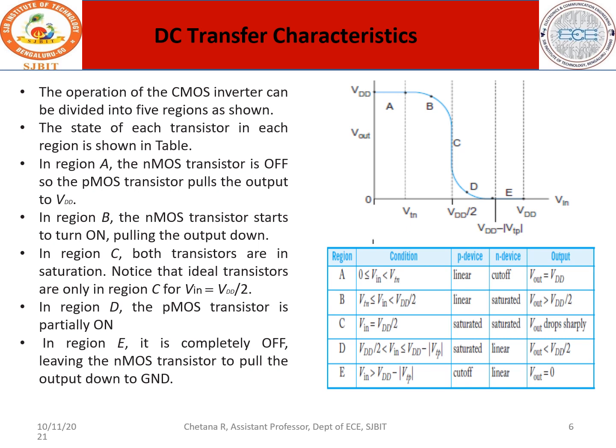In region E, VIN is greater than VDD minus VTP, which is not the condition for PMOS to be ON, so PMOS is in OFF state and NMOS is ON in linear region. When VIN is less than VTN, the NMOS is off and only PMOS conducts, so the output is VDD. At region C, output equals VDD/2. In region E, output is 0, coinciding with the x-axis. The devices NMOS and PMOS are understood in different contexts across regions A, B, C, D, E.